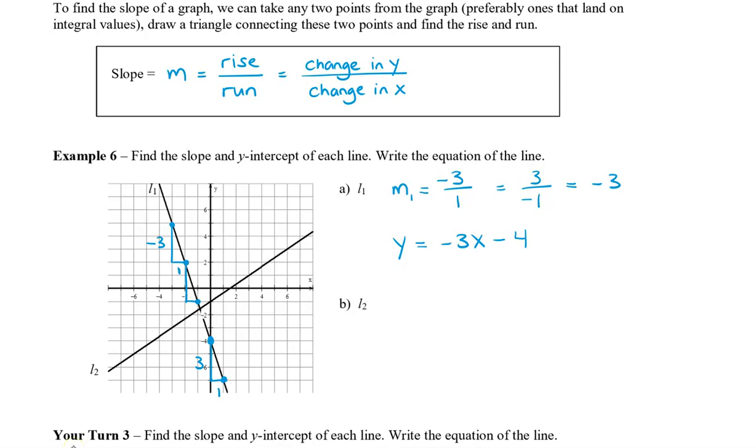Alright, let's take a look at L2. So again, let's find some integral points, and I have a whole bunch of them again. So if I start on the bottom, I'm going to run 3 to the right, so it's positive, and I'm going to go up 2, and that's also positive. So my slope is rise 2, run 3.